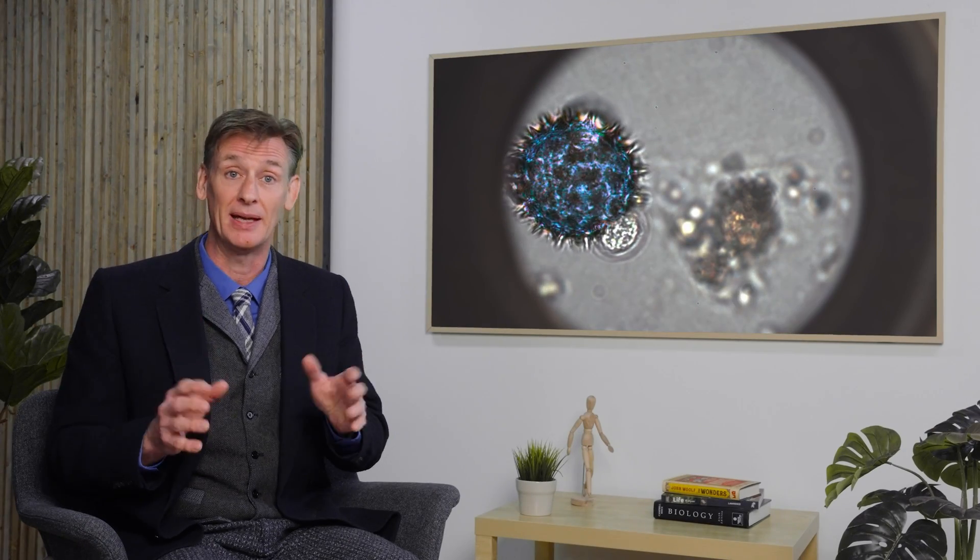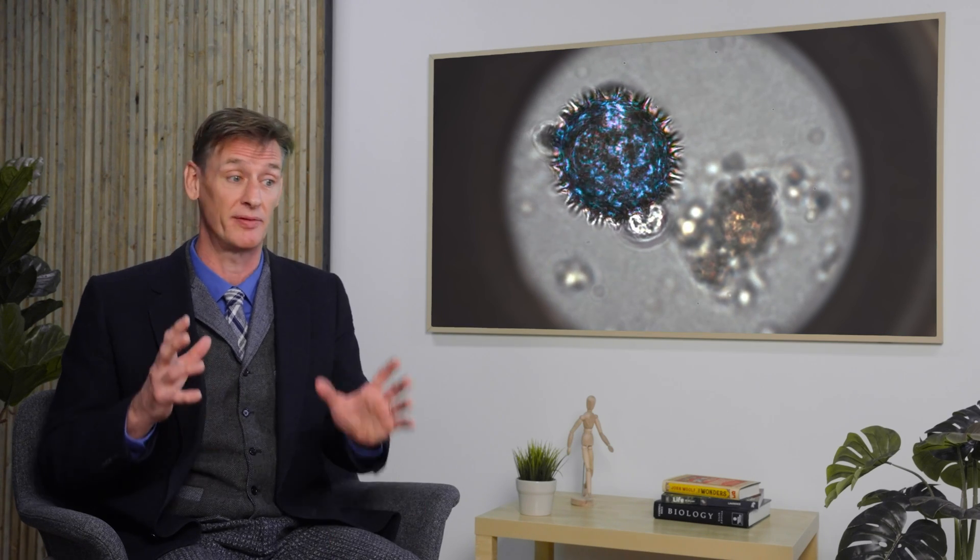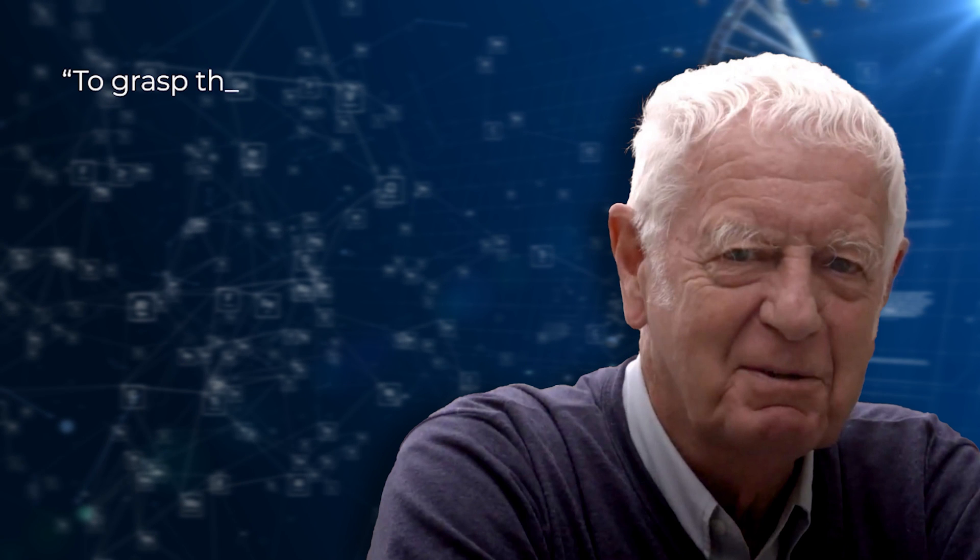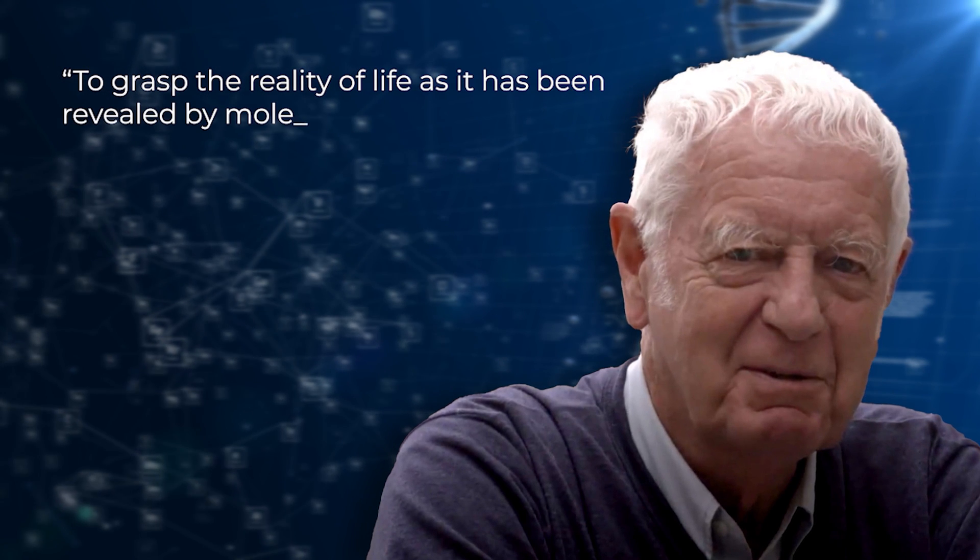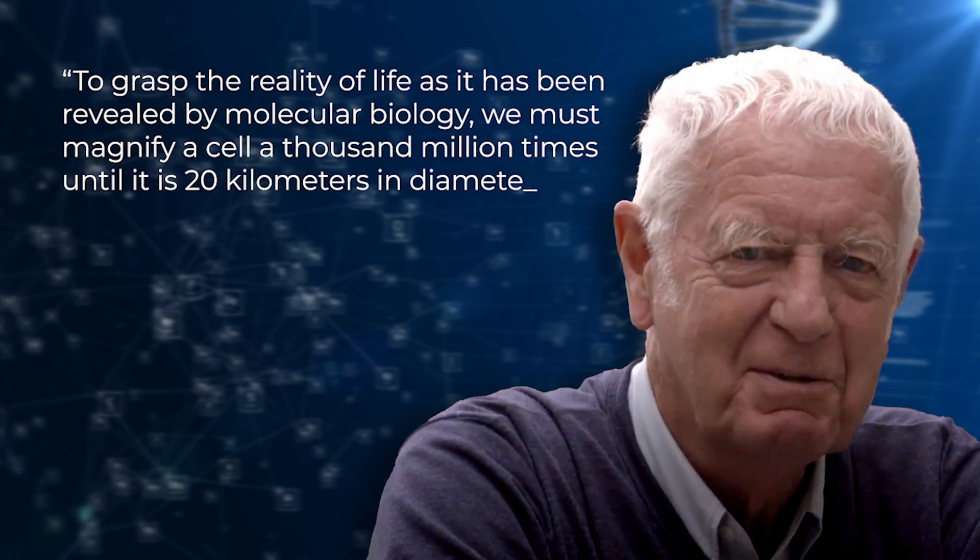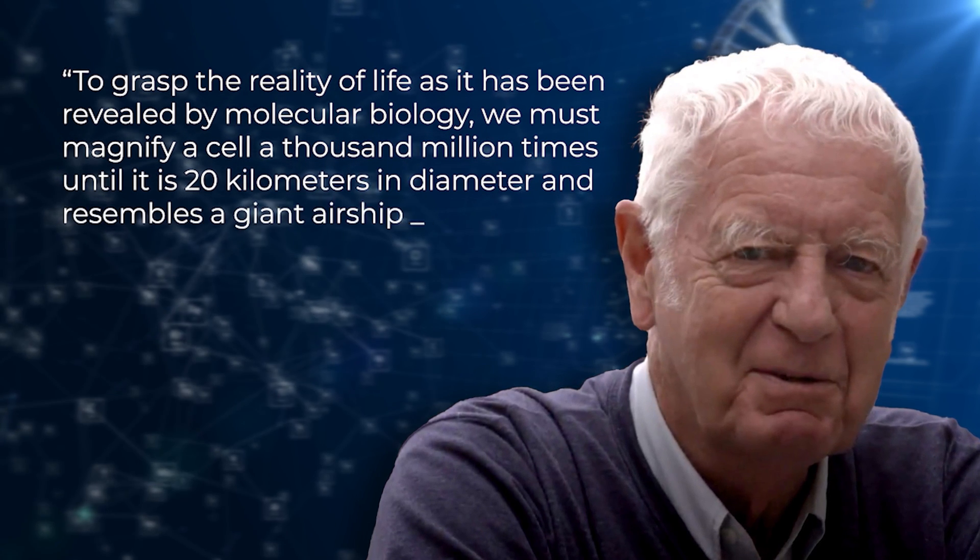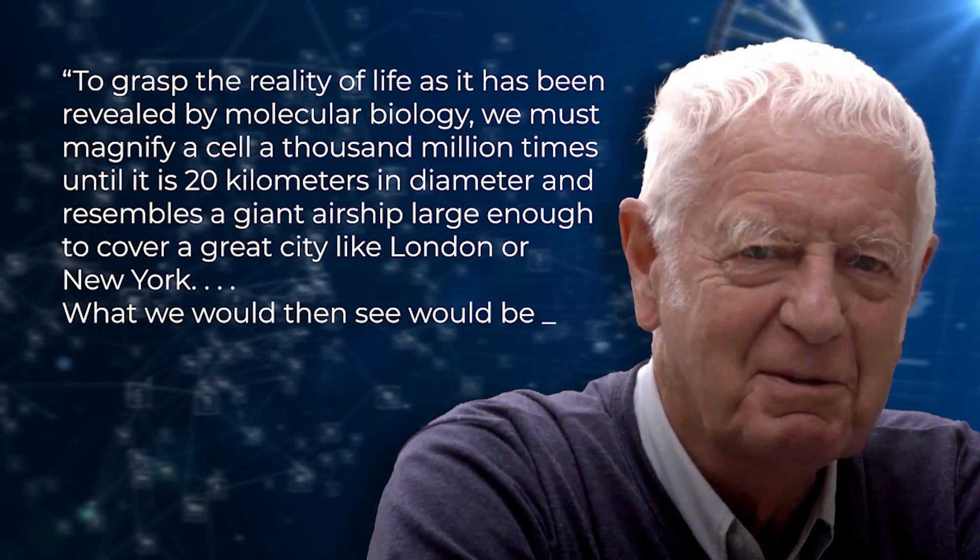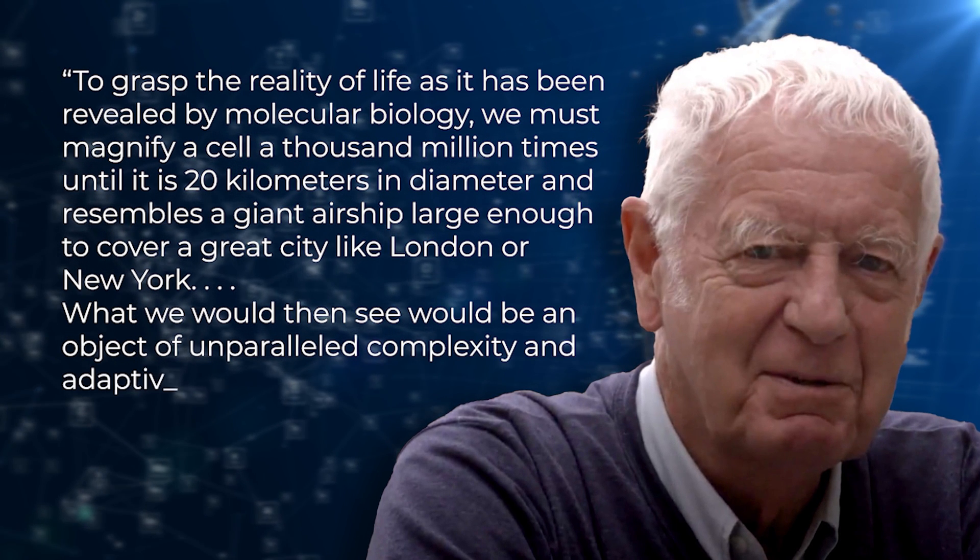Electron microscopy is a technique for obtaining high-resolution images of biological specimens by using a beam of accelerated electrons as a source of illumination. And what's discovered inside the simplest of living things is astounding indeed. As PhD geneticist Michael Denton described, to grasp the reality of life as it has been revealed by molecular biology, we must magnify a cell a thousand million times until it's 20 kilometers in diameter and resembles a giant airship large enough to cover a great city like London or New York. What we would then see would be an object of unparalleled complexity and adaptive design.